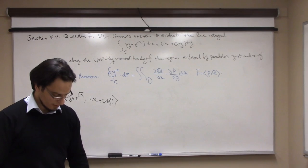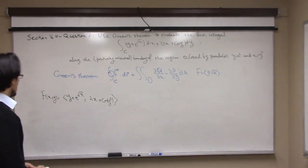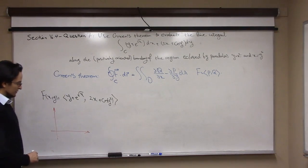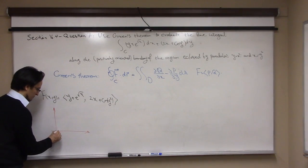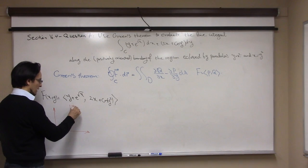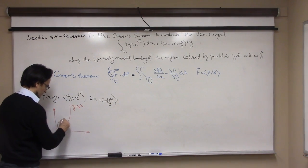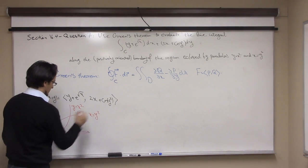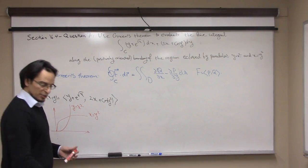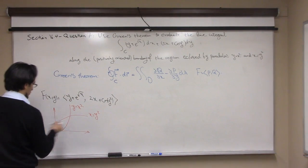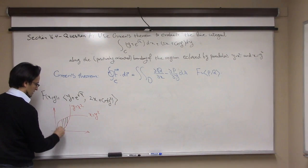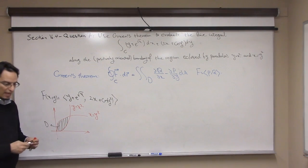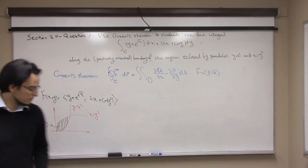Now, the curve is the boundary of the region bounded by the two parabolas: y equals x squared and x equals y squared. The region bounded by these two parabolas — let's call it D.